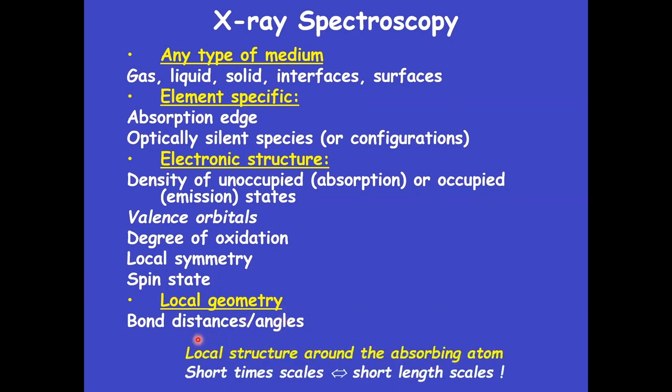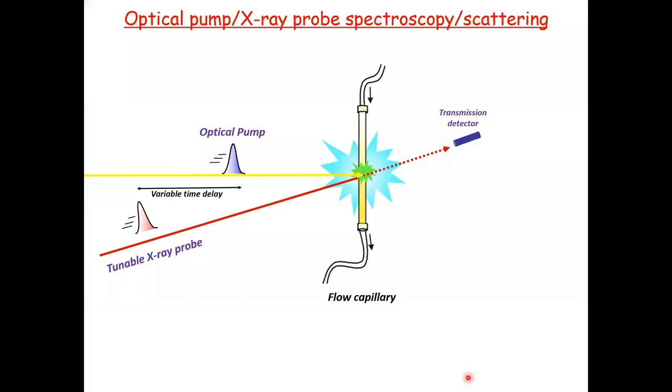Now, of course, this gives you only the local structure around the absorbing atom, contrary to X-ray diffraction where you get the global structure. However, since we were interested in ultra-fast phenomena, short time scales scale with short distance scales. So that's fine for us.